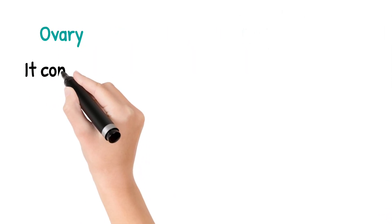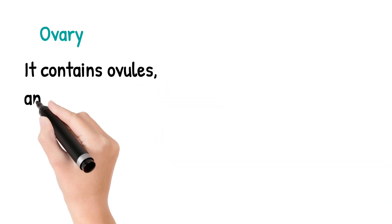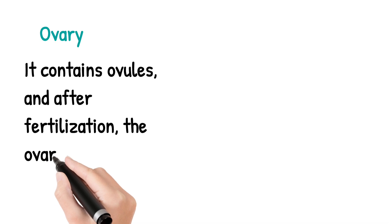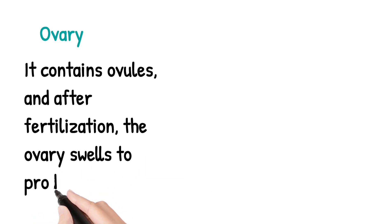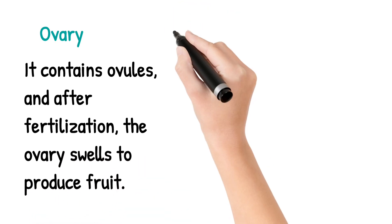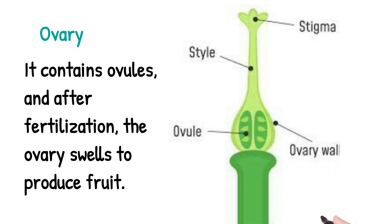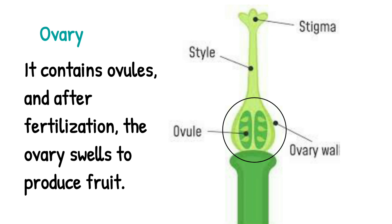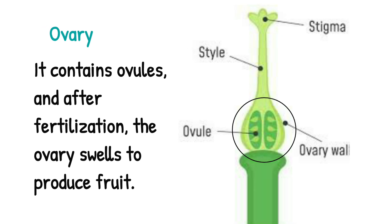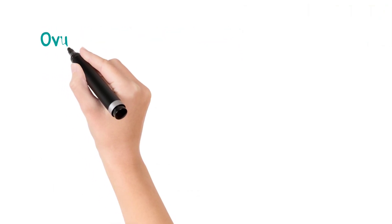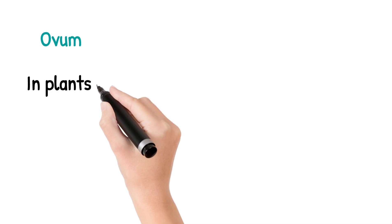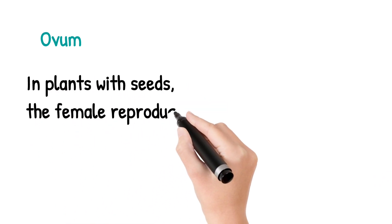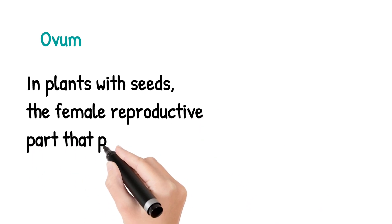Next we move on to the ovary. The ovary contains ovules, and after fertilization the ovary usually swells to produce a fruit. You can see the ovary in the picture — the surrounded part is called the ovary, and it is situated below the style.